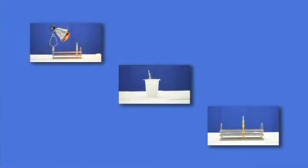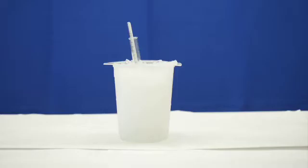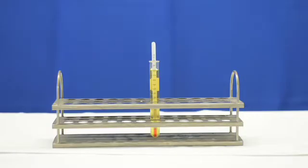To get started, you should set up three temperature stations. Station one should have a heat lamp turned on prior to the start of the experiment with the test tube rack underneath. Station two should have a bucket filled with ice. And station three should have a test tube rack at room temperature.